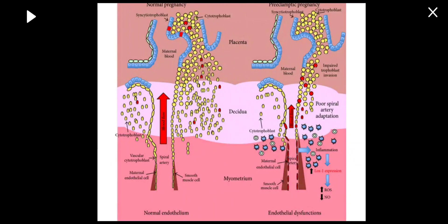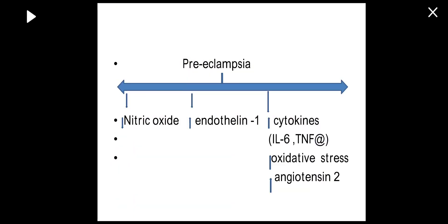Because of the failure of trophoblastic invasion in preeclampsia, the spiral arteries are not converted into wide-bore capillaries and remain the same. They are not able to accommodate the excess blood flow of pregnancy, resulting in vasospasm. The cytotrophoblastic cells fail to invade up to the myometrium, as seen in normal pregnancy.